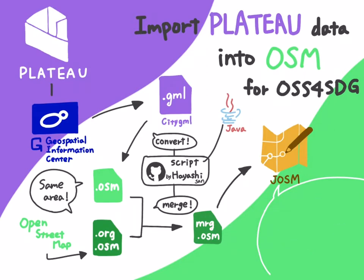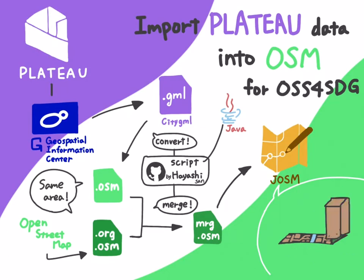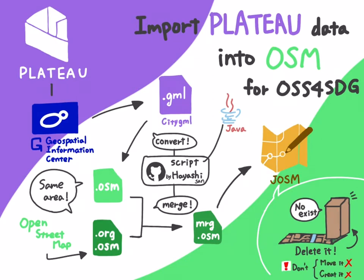When you do this, please set the background image to the satellite image of the year when it was taken, such as Bing and Mapillary, if possible. If there is a building object that clearly doesn't exist, just delete it. Then be careful not to do any operation but deletion.